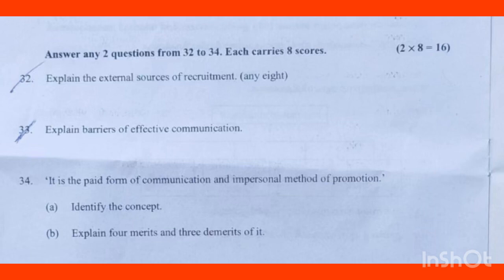Explain barriers of effective communication. This is very important. There are mainly four barriers: Semantic Barriers, Organizational Barriers, Personal Barriers, and Psychological Barriers. Semantic barriers are concerned with problems and obstructions in the process of encoding and decoding of messages into words or impressions.